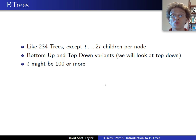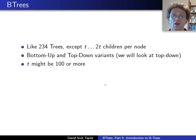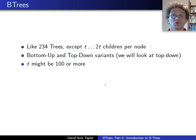Well, that's kind of what B-trees are. They're like 2-3-4-trees, except we're going to say they're sort of 2-up-to-2T-trees, meaning each node can have anywhere from T up to 2T children. Just like 2-3-4-trees, there are bottom-up and top-down variants. We're going to look at the top-down variant here. And just to give you an idea, T might be 100 or larger.